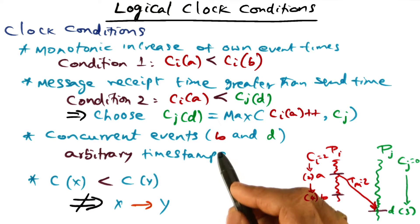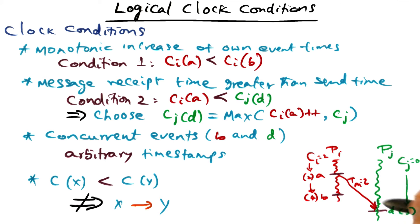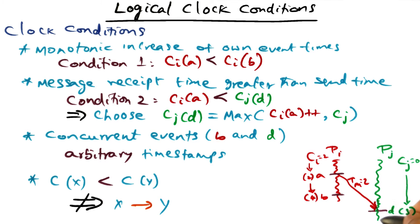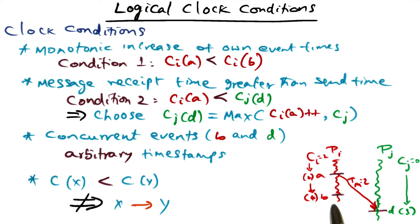If the events are concurrent — looking at this picture, A is the act of sending the message, D is the act of receiving the same message, and B is an independent event happening on process PI, having nothing to do with event D on process PJ — these are concurrent events. For concurrent events, the time stamps are arbitrary. Just by looking at the time stamp, I cannot say that B happened before D. If the time stamp of B happens to be 4, and we give D a time stamp of 3 to satisfy the incoming message constraint, D has a smaller time stamp than B, but that does not mean D happened before B, because these two are concurrent events and there is no way to know which happened before the other.